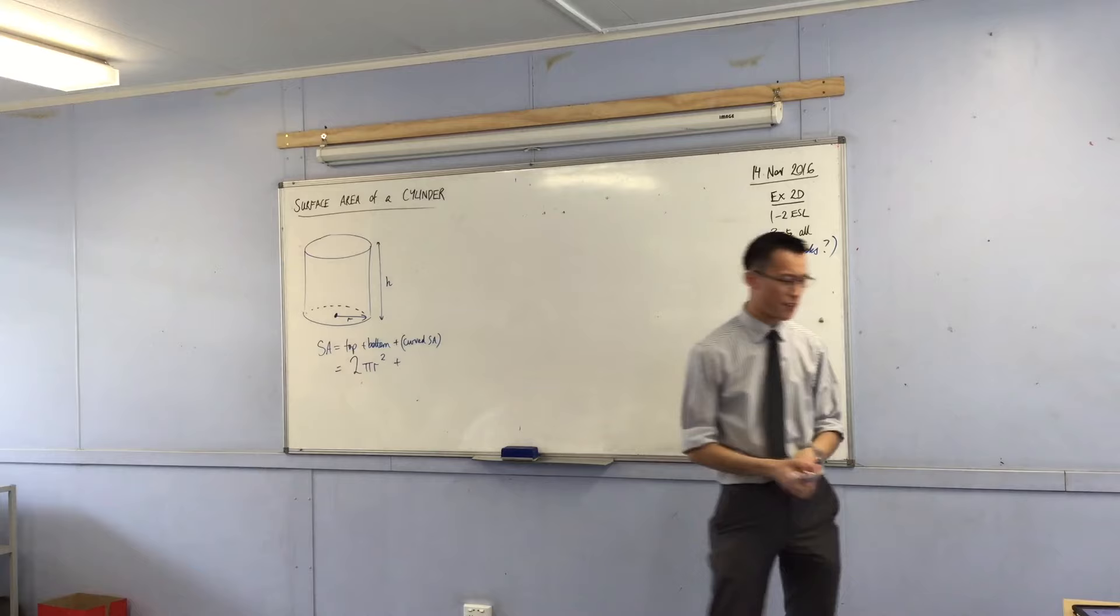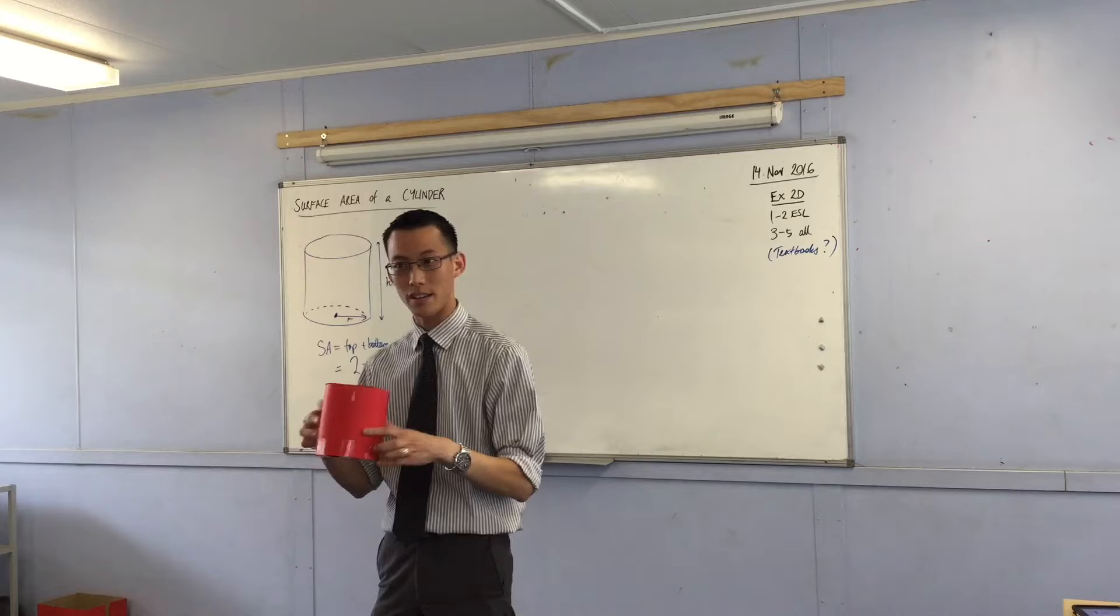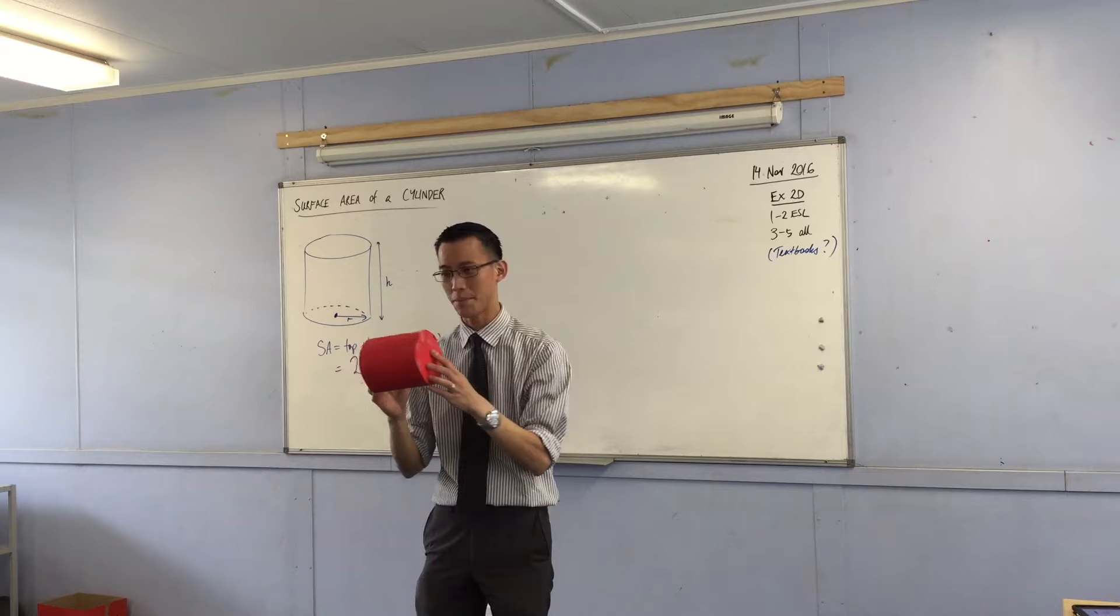So I've got top and bottom. But then to work out this curved bit, well, this is a little bit tricky. You need to visualize this. So I thought I can do better than get you to imagine. I thought, okay, this is what a cylinder looks like, right? You've worked out the top. You've worked out the bottom, which is the same. And then it's this part that goes around, which is the tricky part.